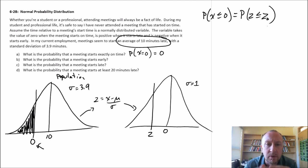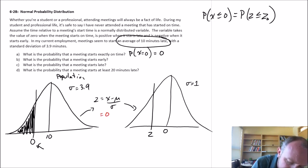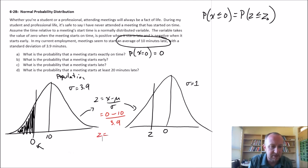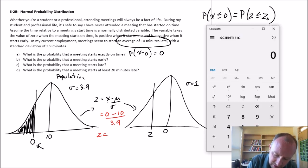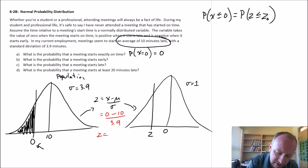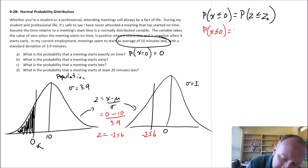The probability that X is less than or equal to zero is going to equal the probability that Z is less than or equal to our critical value. We've got all the values, so we can plug these into our formula. X is 0, the mean of that distribution is 10, and the standard deviation is 3.9. So Z is equal to negative 10 divided by 3.9, which gives us negative 2.56. So the probability that X is less than or equal to zero equals the probability that Z is less than or equal to negative 2.56.